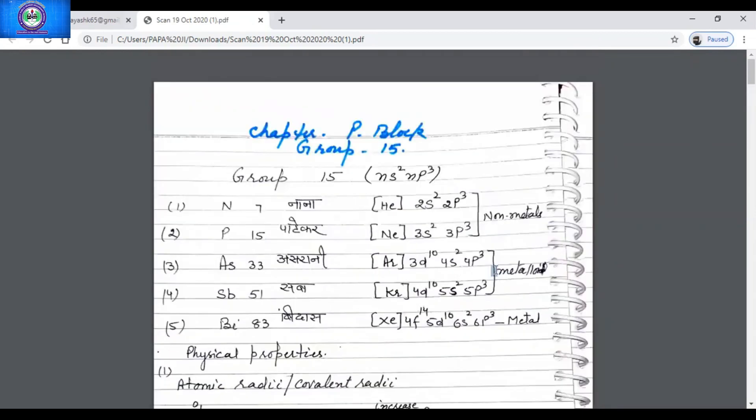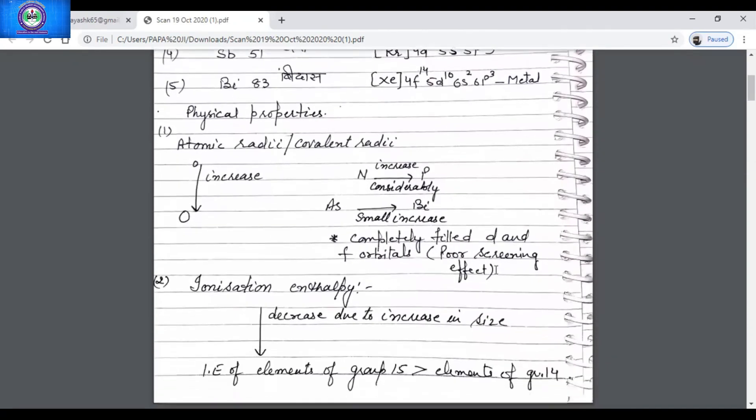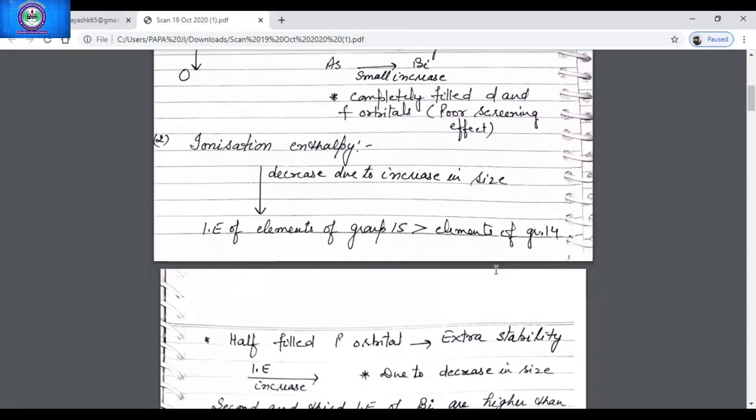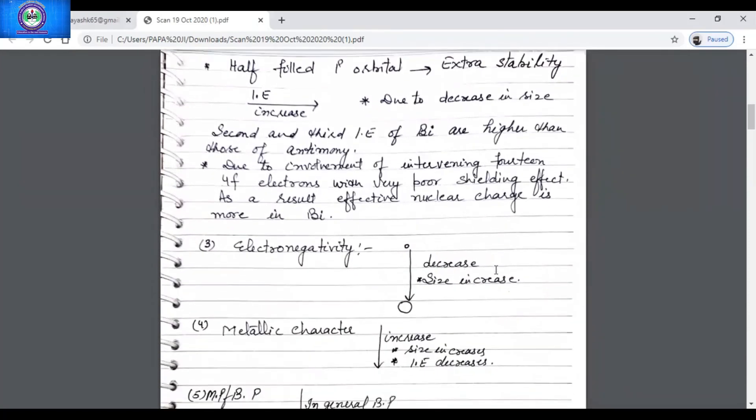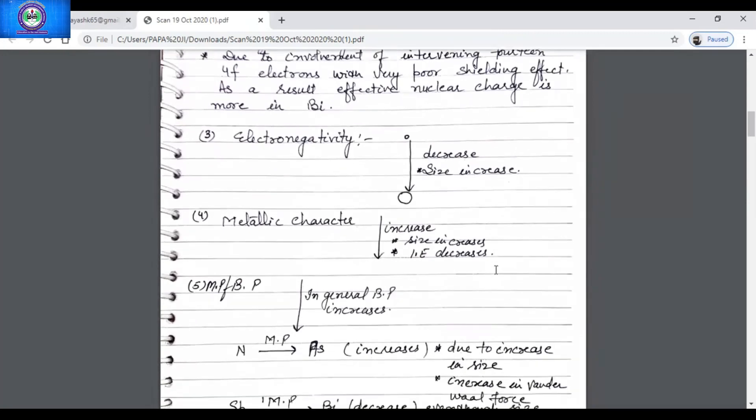Then is electronegativity. Electronegativity, you all know, is the tendency of an atom to attract the shared pair of electrons. The electronegativity as we go down the group decreases. Why? Because of the increase in size. Nitrogen is maximum electronegative here. Electronegativity is 3.